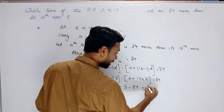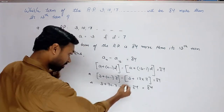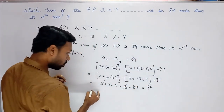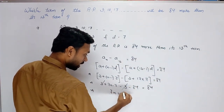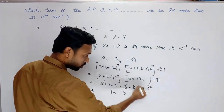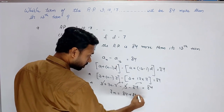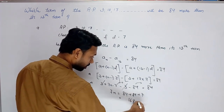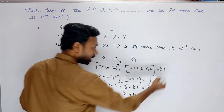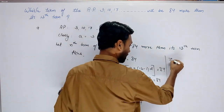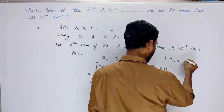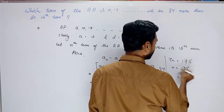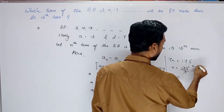So 3 plus 7n minus 7 minus 3 minus 84 equals to 84. Ab 3 aur minus 3 cancel, minus 7 aur minus 84 right-hand side mein jaayenge: 7n equals to 84 plus 7 plus 84. Inko add karenge: 7n equals to 175, and n equals to 175 upon 7, that will be 25.